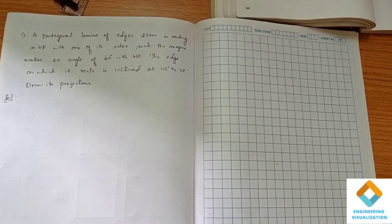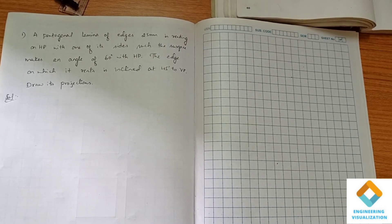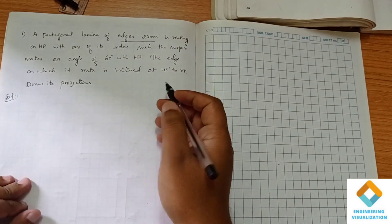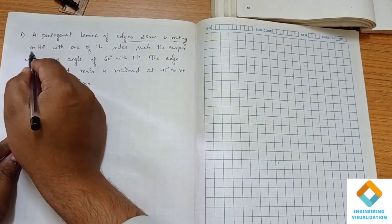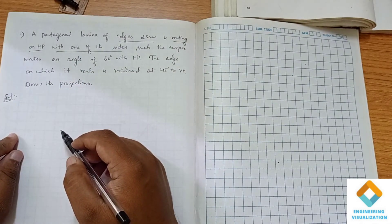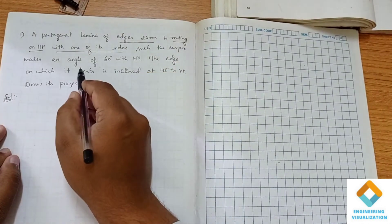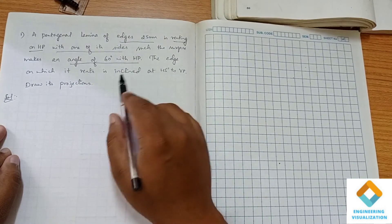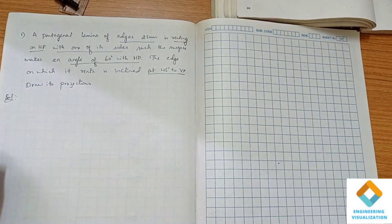Today we are going to learn another problem on pentagonal lamina. A pentagonal lamina of edges 25mm is resting on HP with one of its sides. The surface makes an angle of 60 degrees with HP. The same edge on which it rests is inclined at 45 degrees to VP. Now we have to construct the first position.